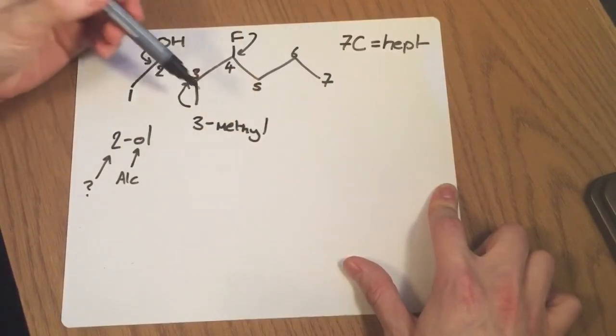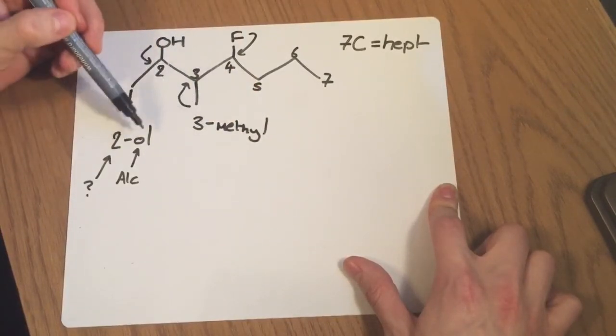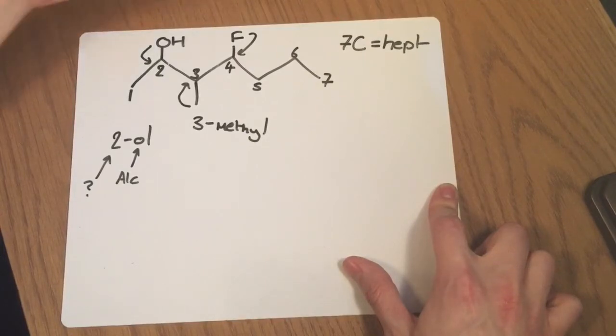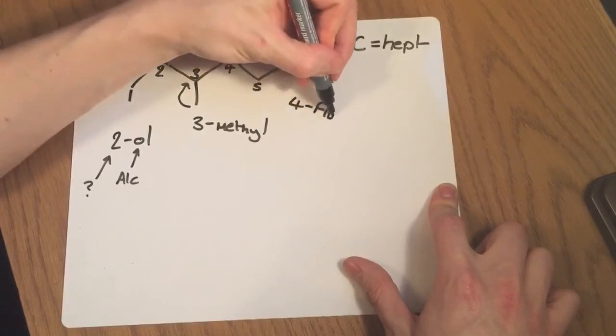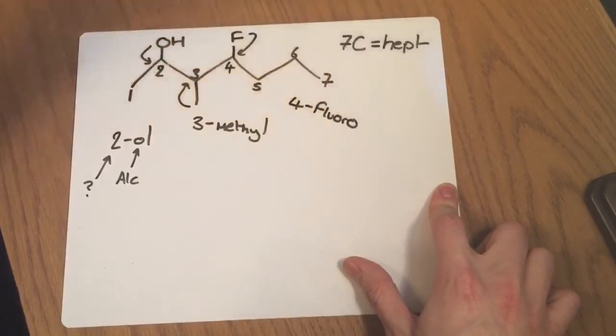You'll notice already that I'm putting dashes between the numbers and the words and that's important. The last functional group I've got here of interest is I've got a fluorine here on carbon number four. So that's going to be a 4-fluoro like so.